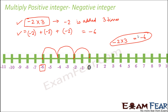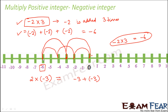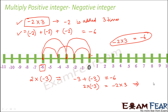Another interesting fact: minus 2 into 3 is the same as 2 into minus 3. What does 2 into minus 3 mean? It means minus 3 is added two times. If you add minus 3 twice on the number line, you first reach minus 3, then minus 6. So 2 into minus 3 equals minus 6, same as minus 2 into 3. This gives us the conclusion: for integers a and b, a into minus b always equals minus a into b.